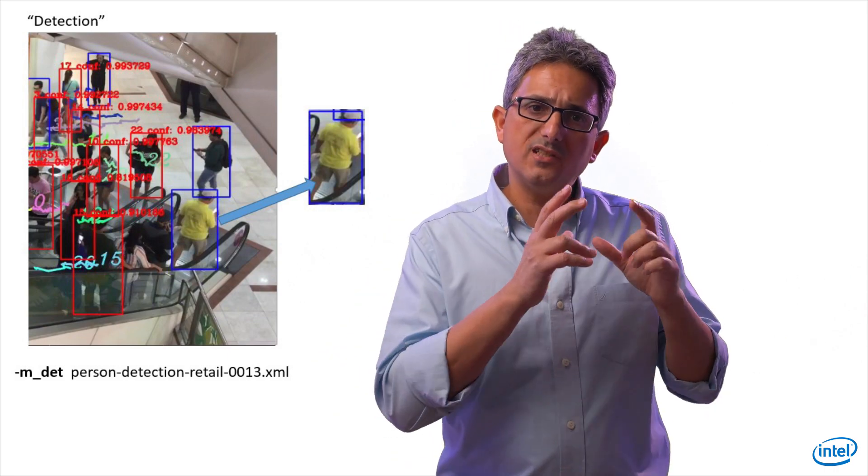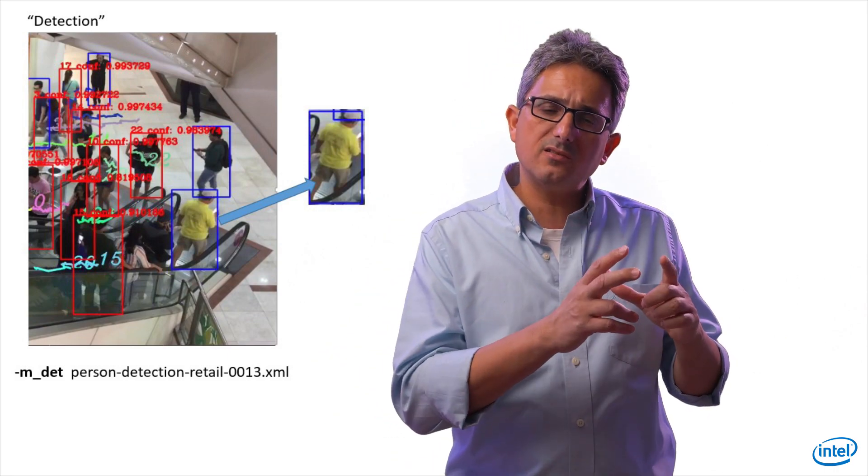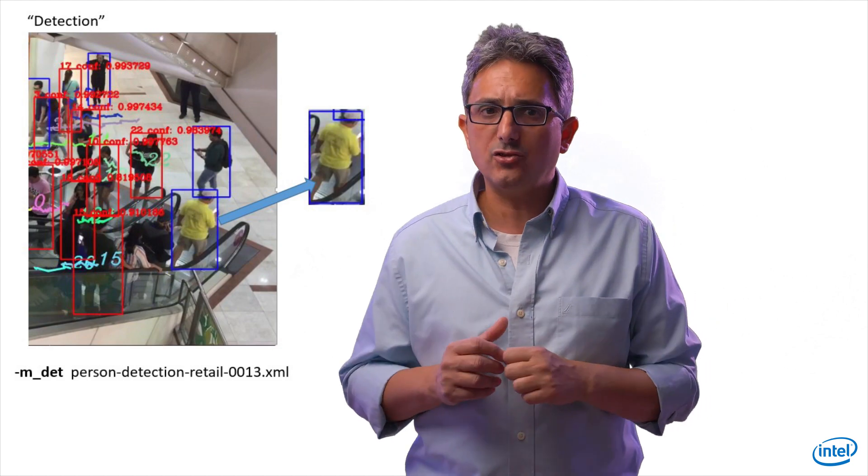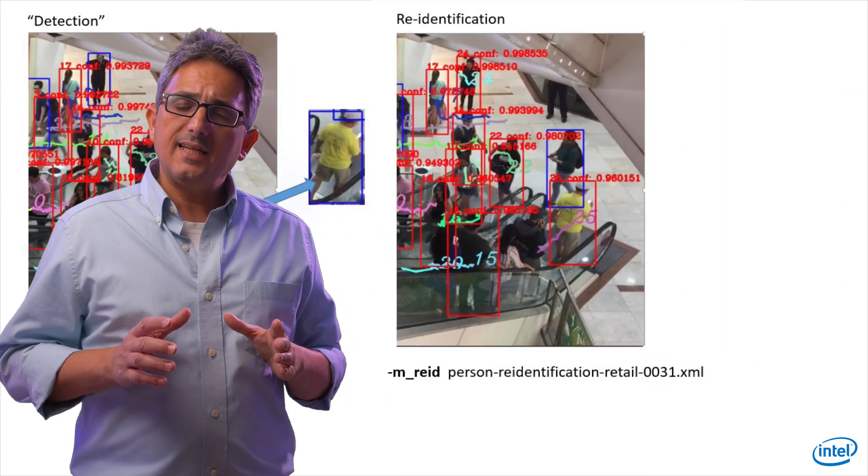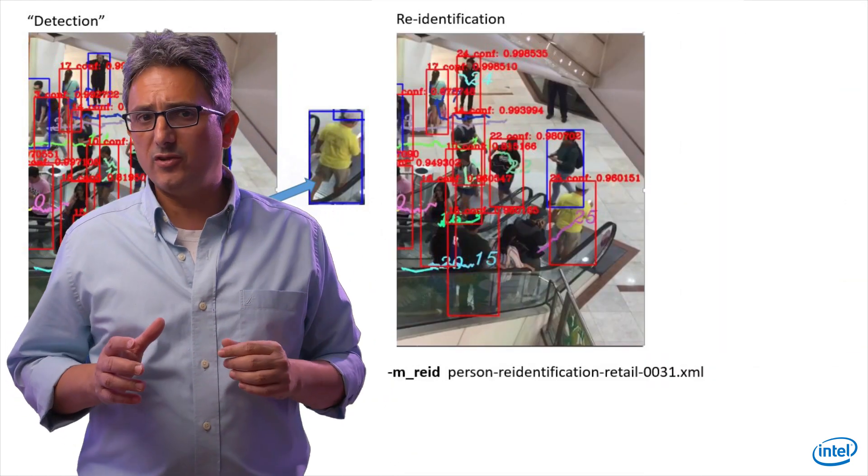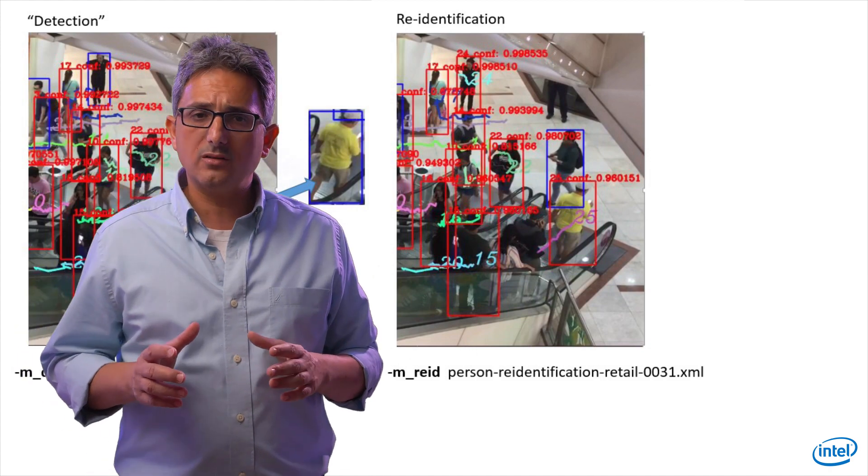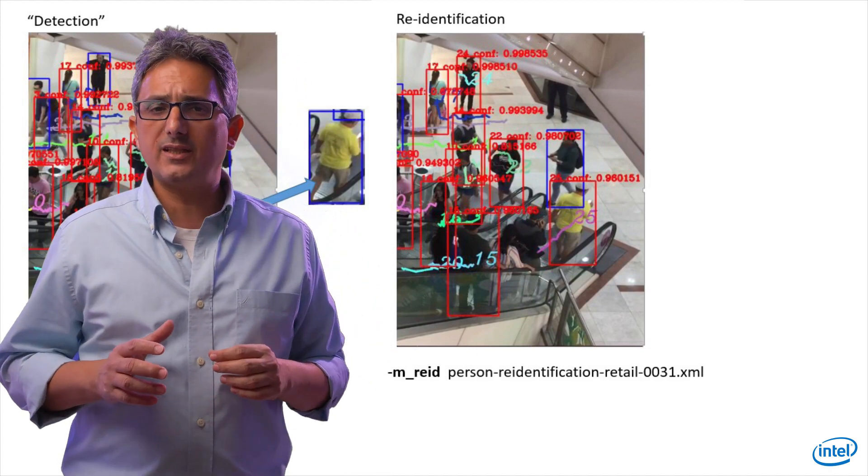The bounding box of this person is being used for re-identification. If it's very easy, it's done using simple computer vision techniques. If not, we're using the re-identification model.